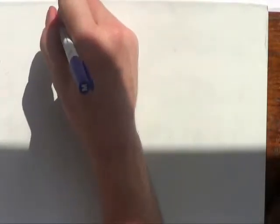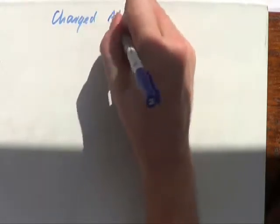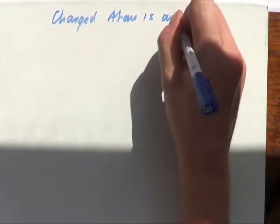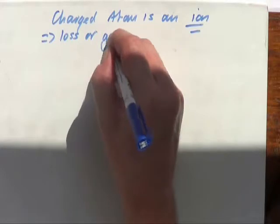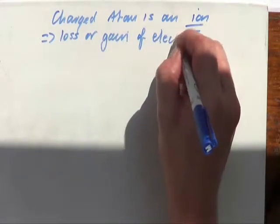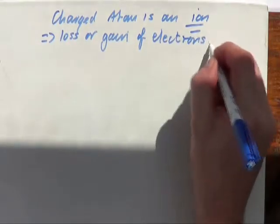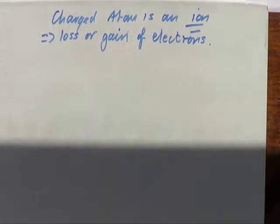Atoms do become charged, but they've got to start losing and gaining electrons in order for that to actually happen. A charged atom is called an ion. We'll deal with that later on when we get into ionic bonding. Ions become charged by losing or gaining electrons — not protons and obviously not neutrons because they have no charge.